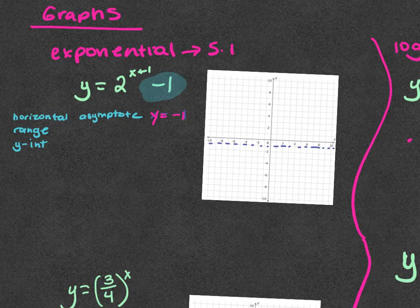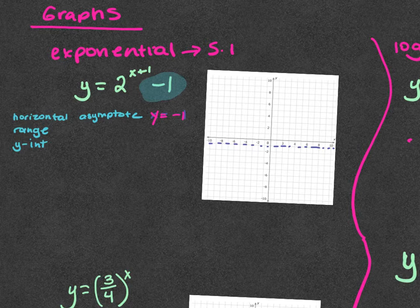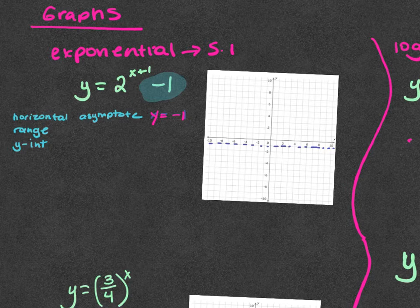The question will say: graph the function, find (a) horizontal asymptote, (b) range, (c) y-intercept. Your answer sheet has the graph on it and three blanks. If it's in exponential form it's a horizontal asymptote; if it's in log form it's a vertical asymptote. And it says so in the instructions.